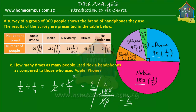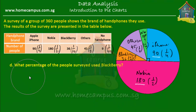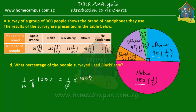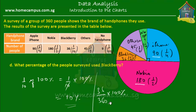Last question: what percentage of the people surveyed used BlackBerry? One-tenth of all people, which means one-tenth times 100% equals 10%. Alternatively, using numbers: 36 out of 360 times 100% — the zeros cancel, 36 and 36 cancel, leaving 10%. So 10% of all the people surveyed used BlackBerry.